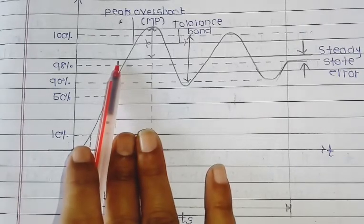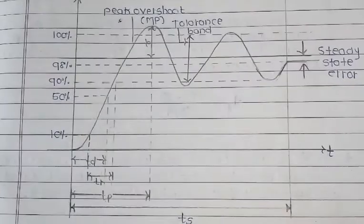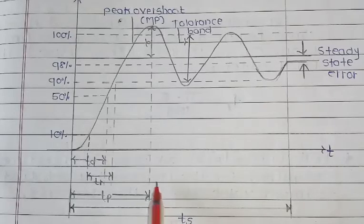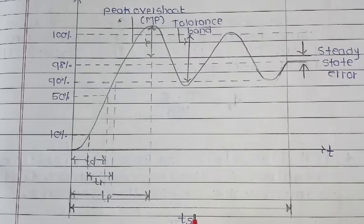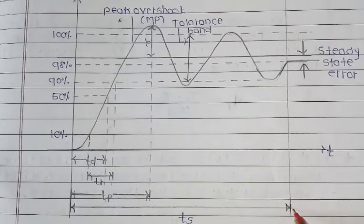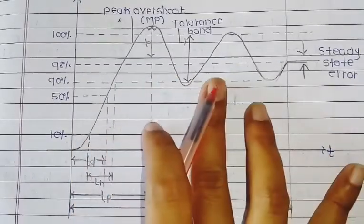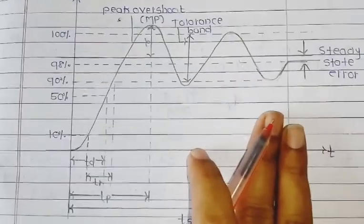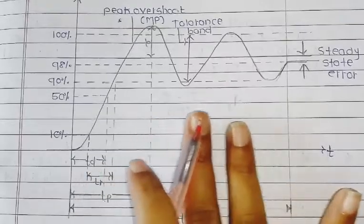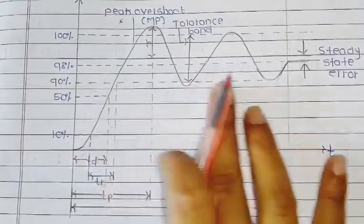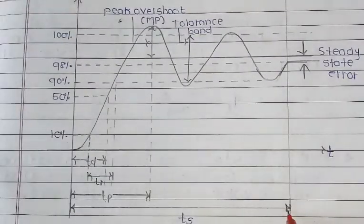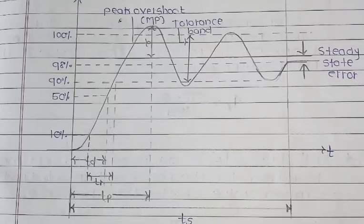Next parameter is settling time, denoted as Ts. It is defined as the time required for the response to reach and stay within a specified tolerance band, which is usually 2% to 5% of its final value. The formula is: Ts equals 4 into T, or Ts equals 4 upon zeta times omega-n.